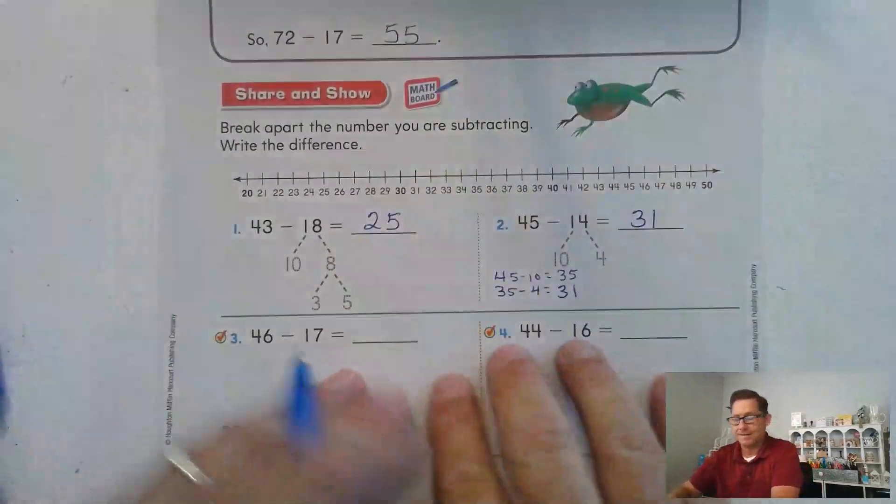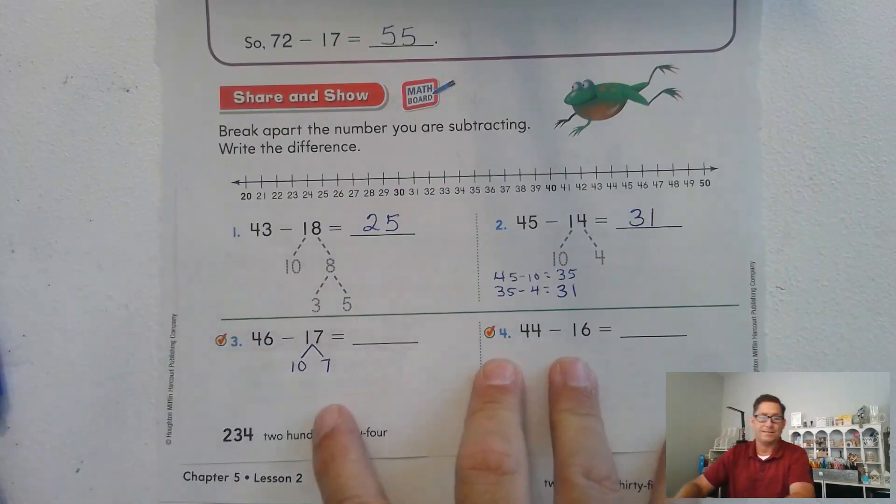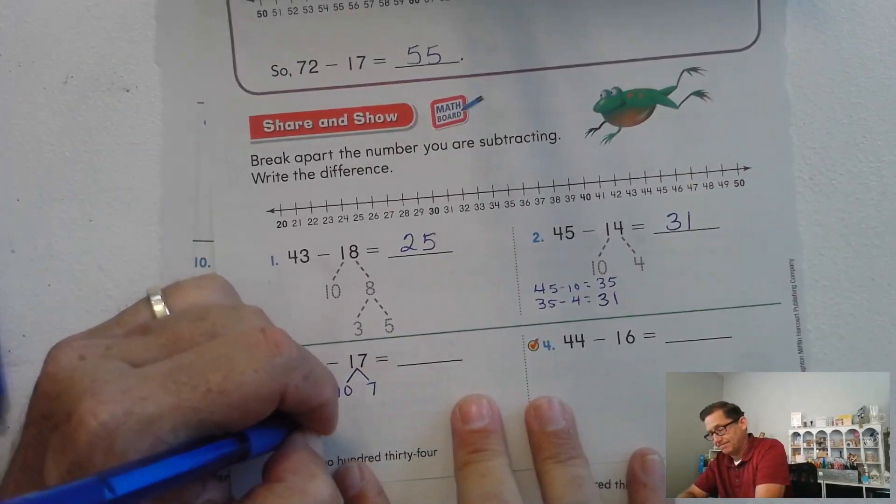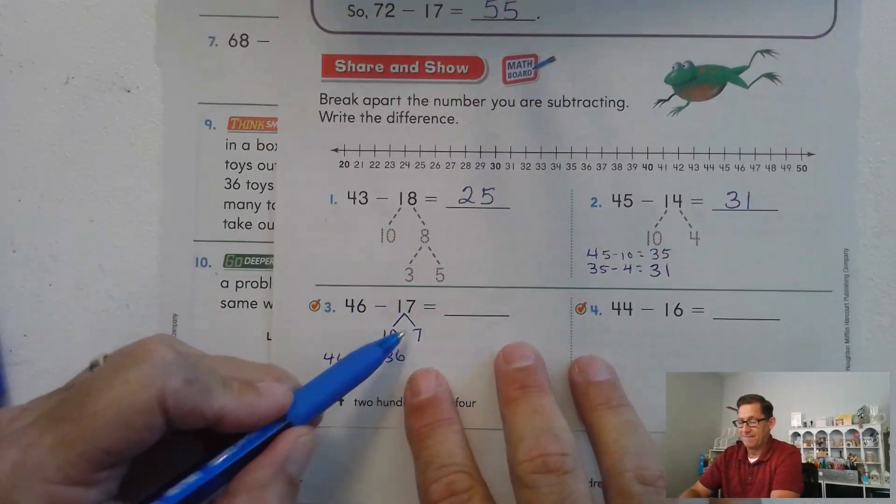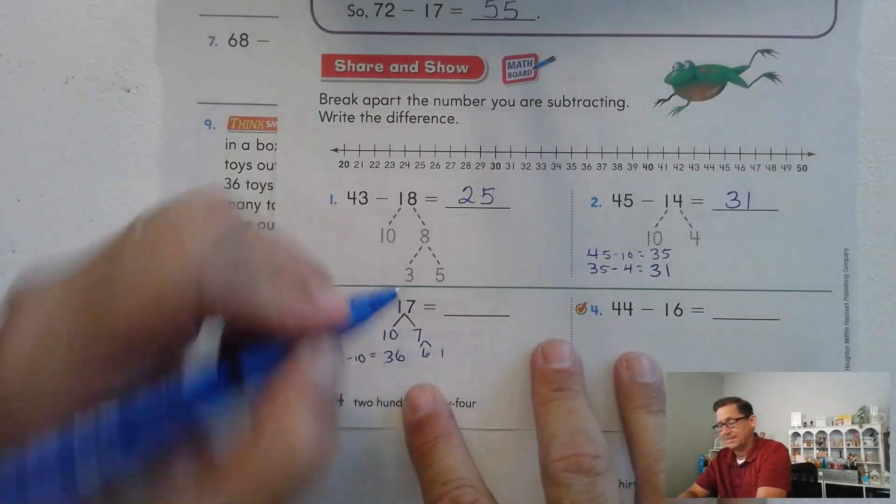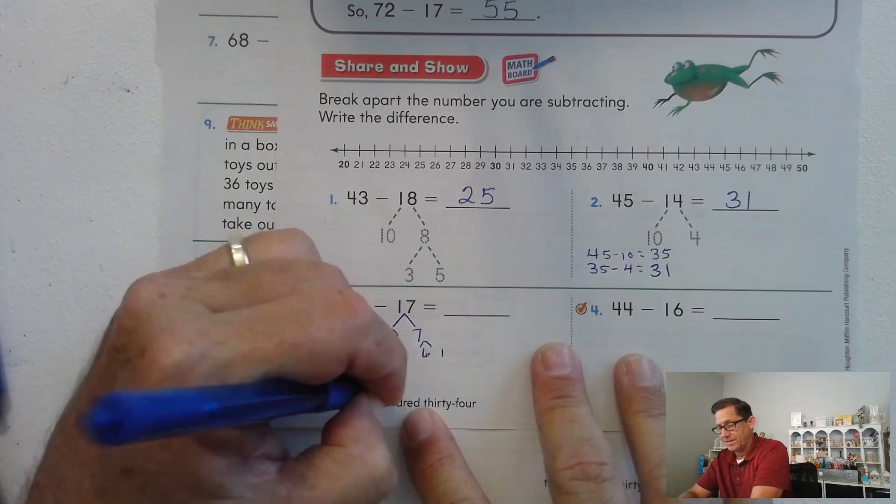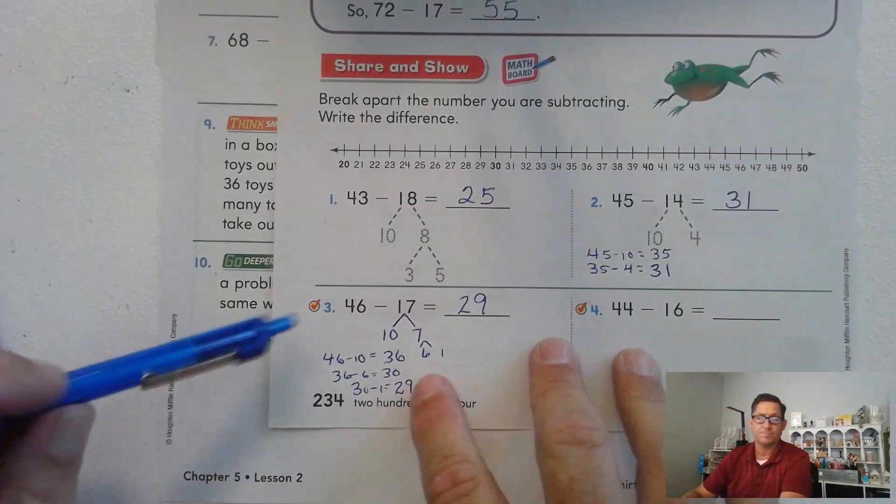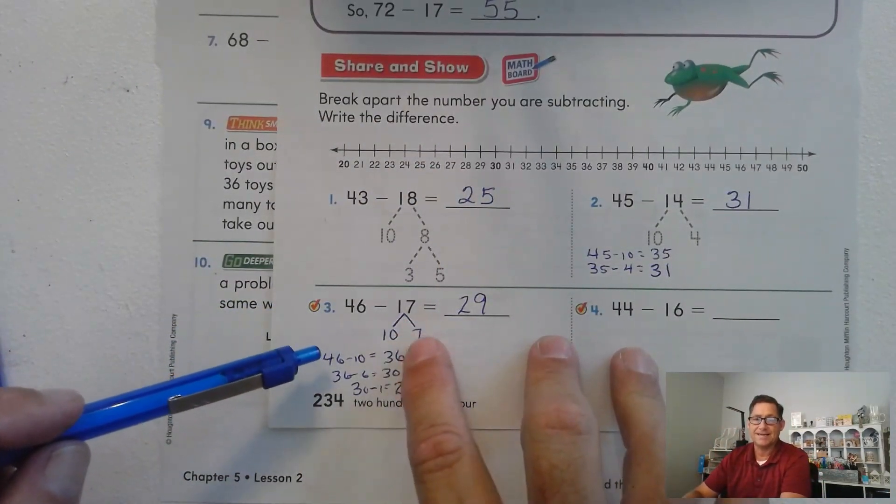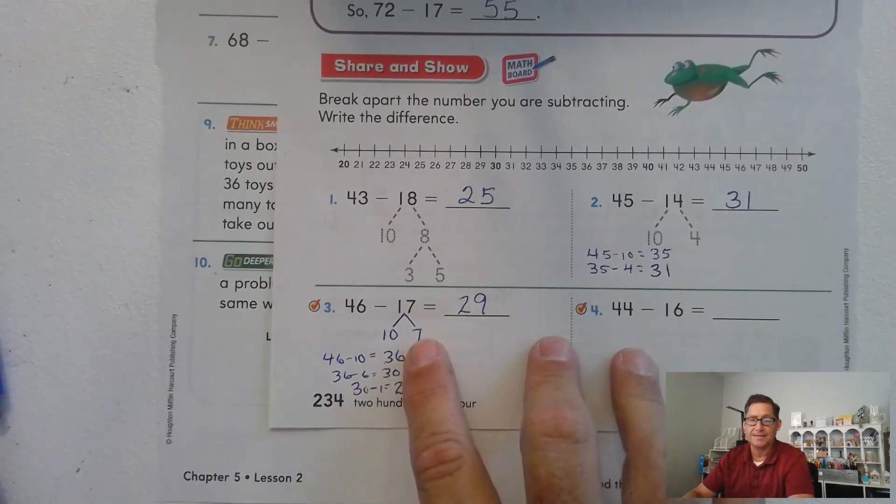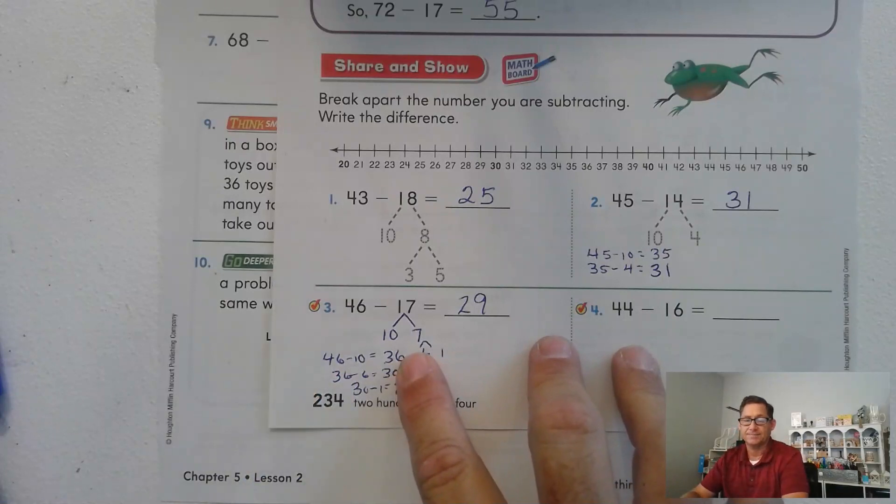46 minus 17. Again, we want to break it into 10s and 1s. 46 minus 10 is 36. Now, 7. Since we're at 36, we want to break 7 into 6 and 1. 36 minus 6 is 30. 30 minus 1 is 29. Make sure you're following along here. 46. We broke the 17 into 10 and 7. This is just one strategy for subtracting.